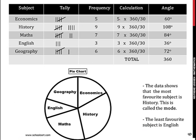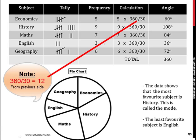This is how it looks like. This is the tally, this is the frequency, and this is the calculation. Remember, we had 360 divided by 30, which is 12. So 5 times 12 is 60, 9 times 12 is 108, 7 times 12 is 84, 3 times 12 is 36, and 6 times 12 is 72. The sum of these angles should total 360 degrees, and you use these different angles to construct your pie chart.